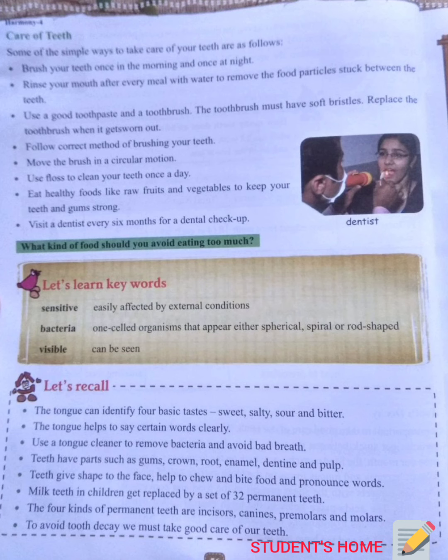Number four, follow the correct method of brushing your teeth. Number five, move the brush in a circular motion. Number six, use floss to clean your teeth once a day. Number seven, eat healthy foods like raw fruits and vegetables to keep your teeth and gums strong. Number eight, visit a dentist every six months for a dental checkup.